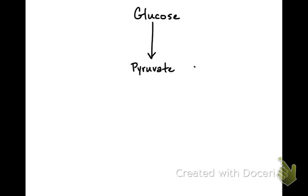We're going to talk about cellular respiration starting with glucose. All the large molecules we eat have to be broken down and feed into the process at different points, but we'll start with the simple sugar glucose. Glucose is broken down first into a molecule called pyruvate, which is three carbons — glucose has six, so it's literally split in half. Glycolysis is the process that does this, and glycolysis literally means splitting glucose. Glucose could have two different fates from here.